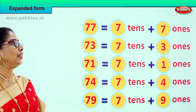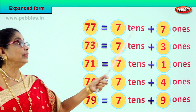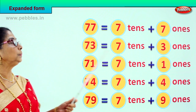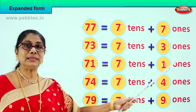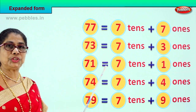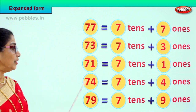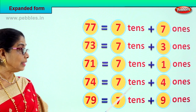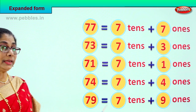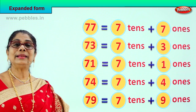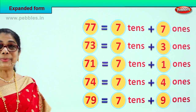Let's read together. 77 is equal to 7 tens plus 7 ones. 73 is equal to 7 tens plus 3 ones. 71 is equal to 7 tens plus 1 one. 74 is equal to 7 tens plus 4 ones. 79 is equal to 7 tens plus 9 ones. You learnt how to expand the numbers. Good!